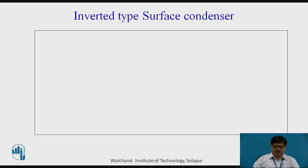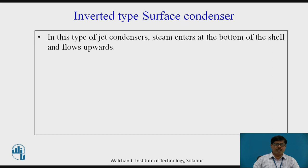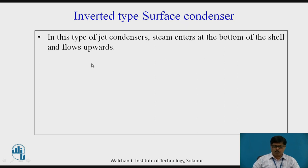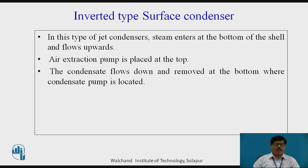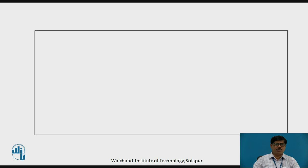Now let us see the inverted type of surface condenser. The inverted type of surface condenser is similar to the downflow surface condenser, only with the difference that instead of steam being admitted from the top as in the downflow or central flow surface condenser, here the steam is admitted at the bottom of the shell and it flows upwards. The air extraction pump is placed at the top and condensate flows down and is removed at the bottom where the condensate pump is located.